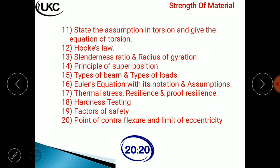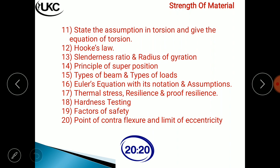Factor of safety (FOS) is used to account for uncertain conditions. For example, a chair designed for one person may sometimes be used by three or four people. To avoid failure under such uncertainty, a factor of safety is considered before designing the part. Point of contraflexure is from chapter three on shear force and bending moment diagrams, and limit of eccentricity is from the eccentric loading chapter.